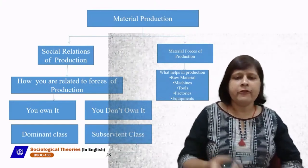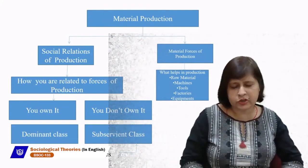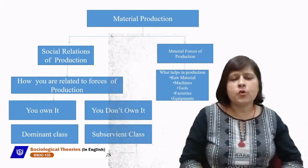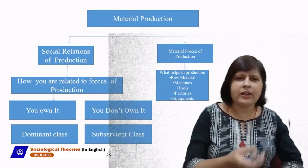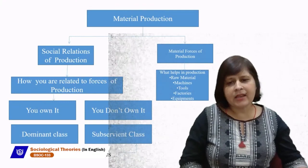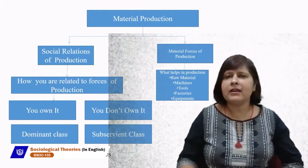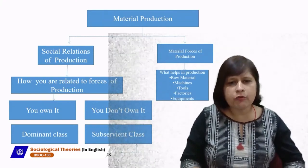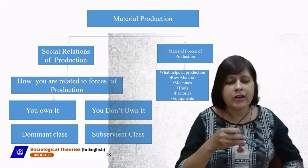The second factor important for material production is social relation of production — how one is related to the means of production. There are two ways human beings are related to the means of production. First, there are those who own the means of production — raw material, machines, tools, factories, equipment, lands. Those who own it are known as the dominant class. Another group who don't own the means of production — they don't have raw material, machines, tools, factories, lands or equipment — they don't own anything.